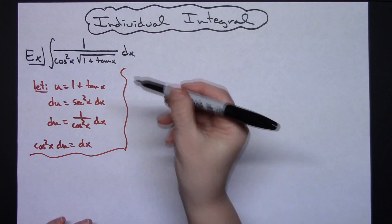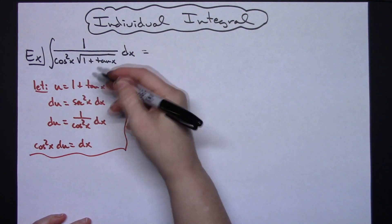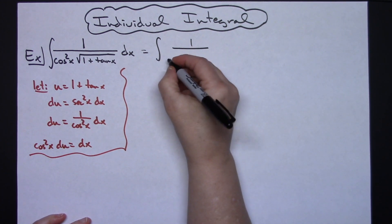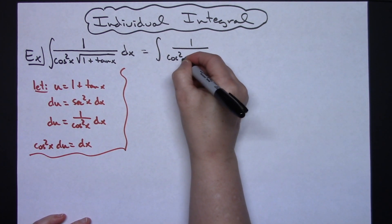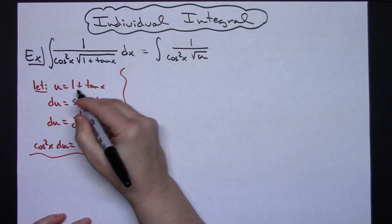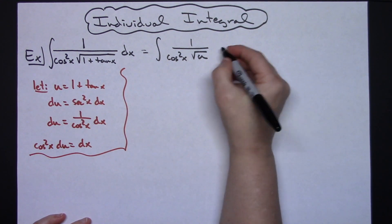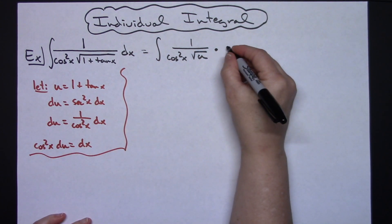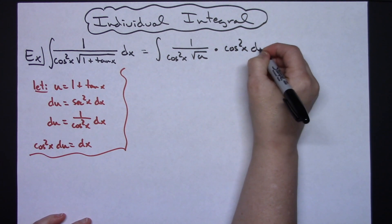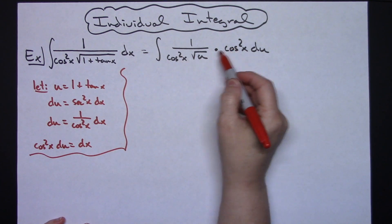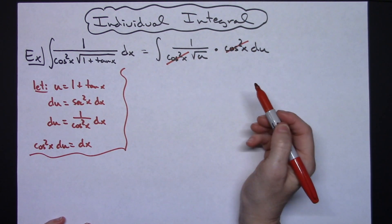Then we'll come up here to our original integral and we'll start making our substitutions. We'll have the integral of 1 over the cosine squared x still there and then underneath that radical we'll have our u for the 1 plus tangent x. And then replacing dx with what that equals we'll have our cosine squared x du.